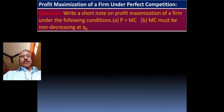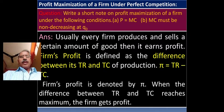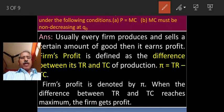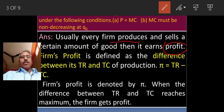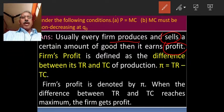Usually, every firm produces and sells certain amount of goods. Then it earns the profit. Every firm has to get the profit. It means it first produces the goods and also sells in the market. Then whatever the amount of goods is sold in the market, it will earn the profit.